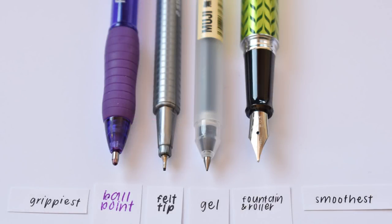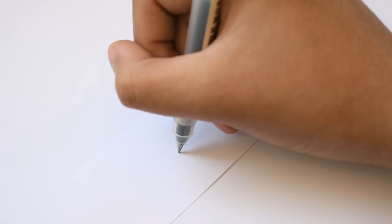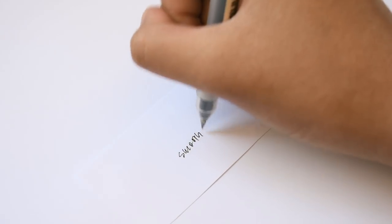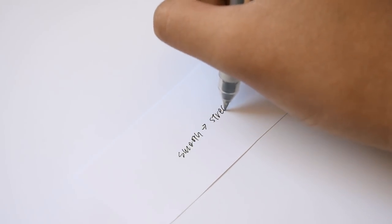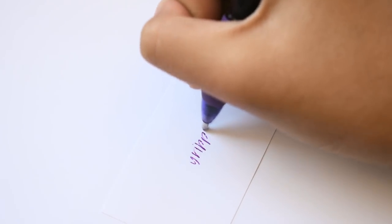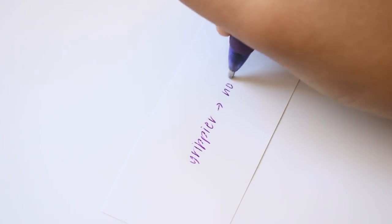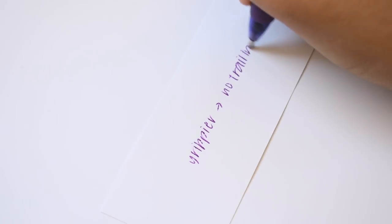The smoothness of the paper and pen you use also affect your handwriting. Smooth paper and pens allow you to write faster, but also cause more of those streaky trailing lines. If your handwriting has those streaky trails, use pens and paper that are more grippy.